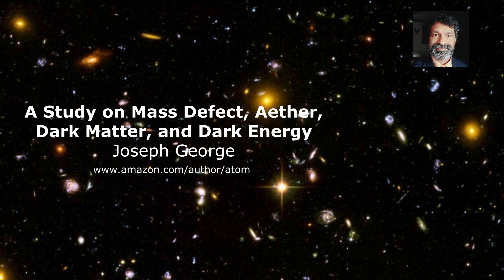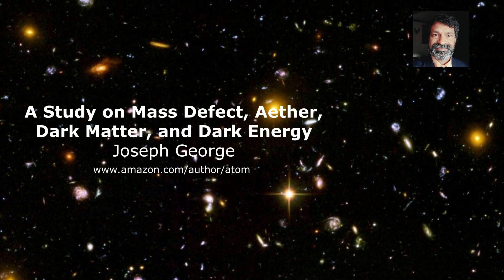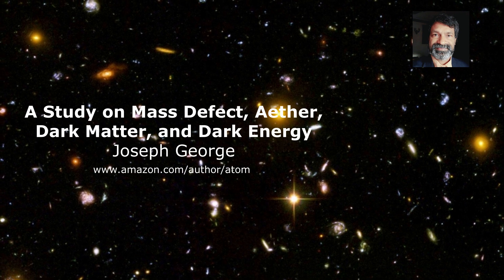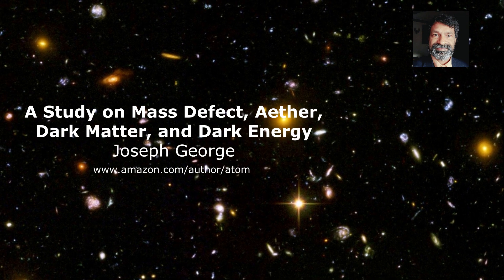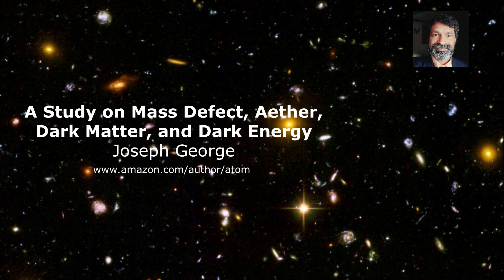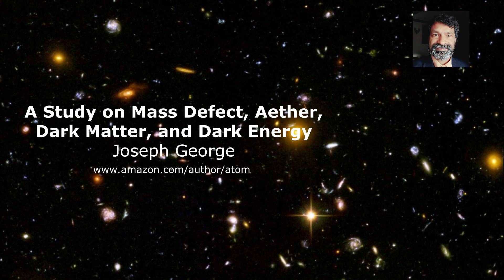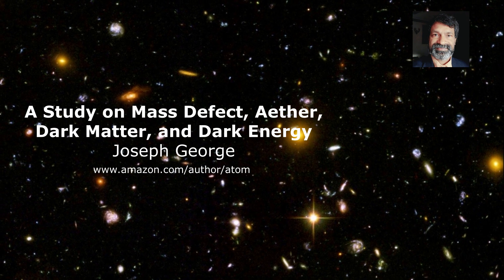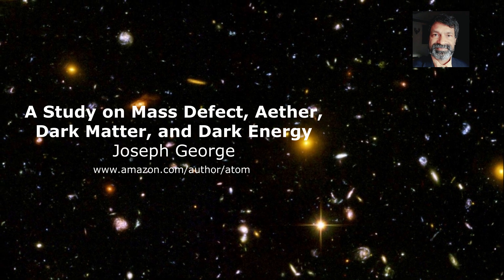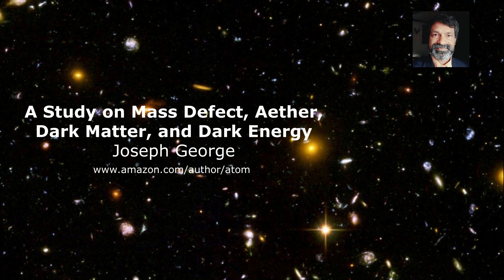As a result, light can be refracted, which helps explain phenomena such as gravitational lensing and the bending of starlight. This dense ether region surrounding massive bodies can also account for the precession of the perihelion of Mercury's orbit around the Sun and the orbital behavior of S2 stars near the galactic center.